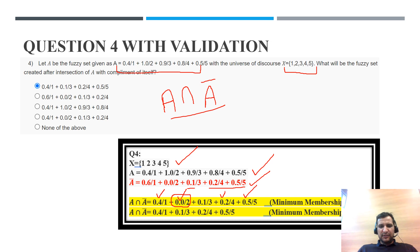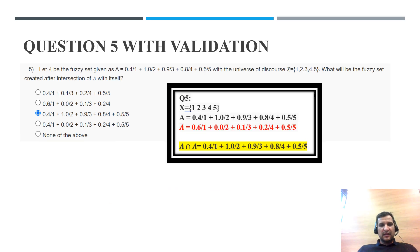Elements with membership value 0 can be neglected. After this modification, the correct answer is identified and from the options the correct option is confirmed. For the next similar question, the universe of discourse is X with fuzzy set A and fuzzy set A-complement as before.